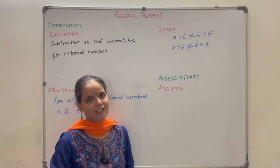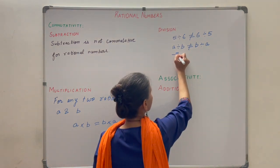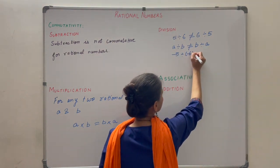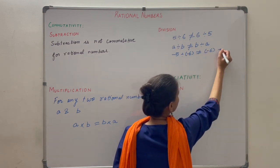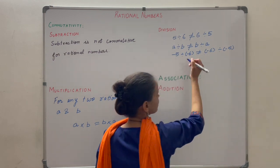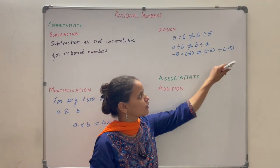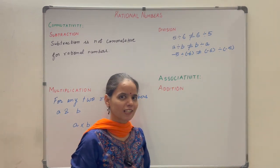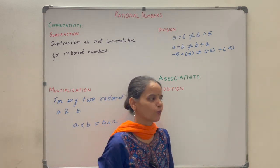Similarly for integers, let us take two integers: minus 5 and minus 6. Minus 5 divided by minus 6 is not equal to minus 6 divided by minus 5. Here you get 5 by 6 and on the other side you get 6 by 5. They are not equal, so division is not commutative for integers.